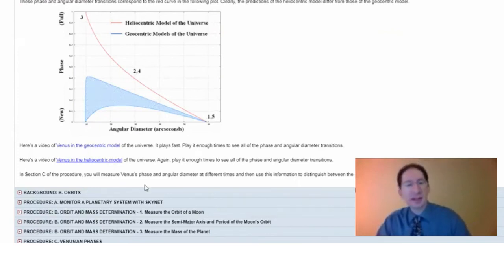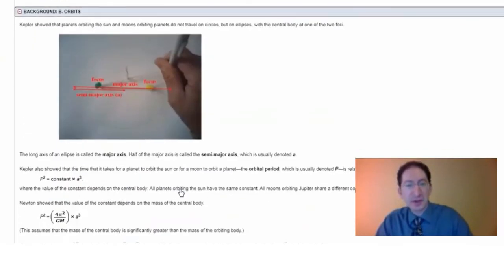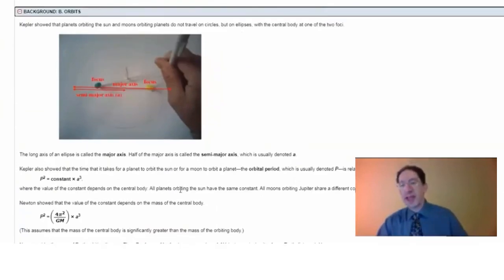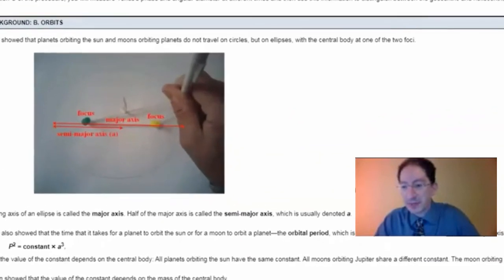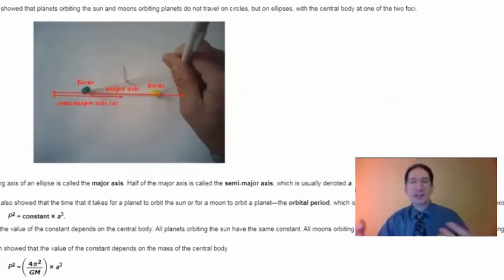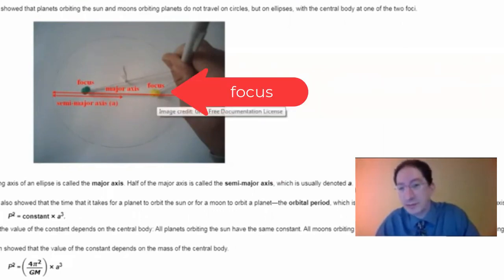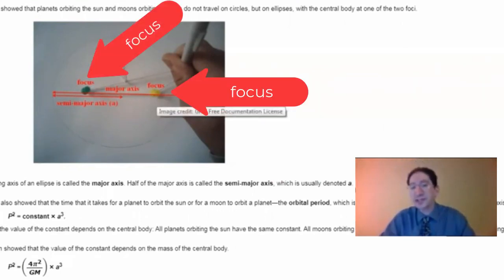Let's move on to the second background section. We're jumping forward in time from Galileo to Kepler and Newton. By the time we get to Kepler, he realized that the orbits are not circular but elliptical, with the central body — in this case the sun — at one of the two foci. Focus is singular; foci is plural.